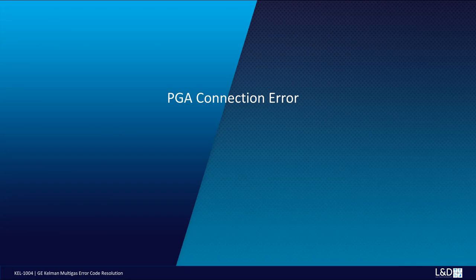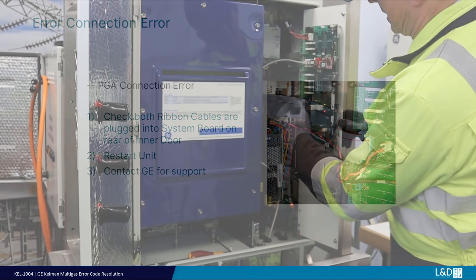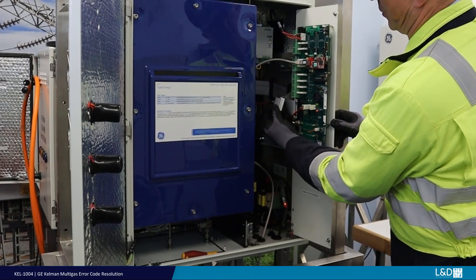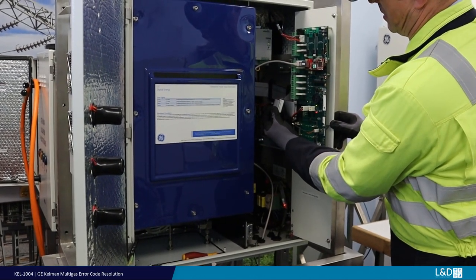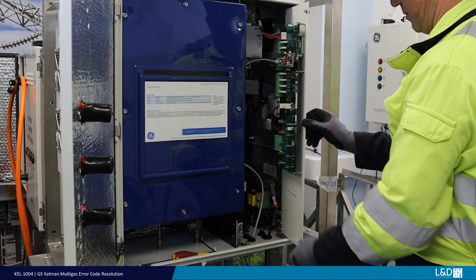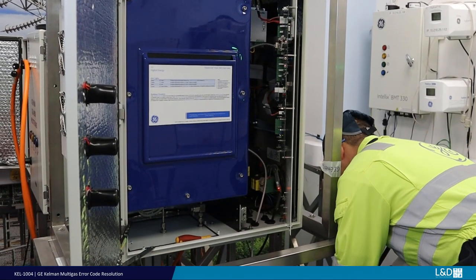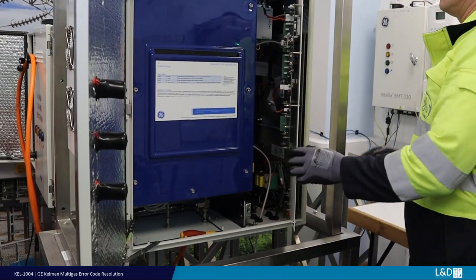PGA connection error. This may be due to the main communication cable disconnection or loosening and may be checked and rectified as shown. Safely power off the monitor and check the security and fitment of the main ribbon cables, looms, or with DGA900 the PCC, for presence, connection and tightness.